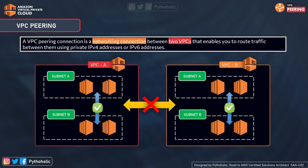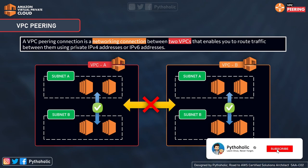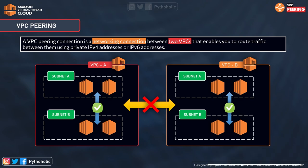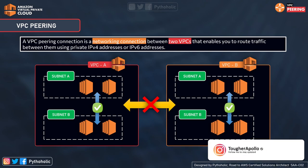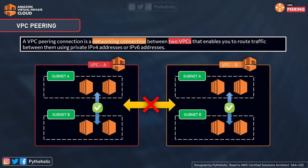The problem we were talking about was a scenario where the instances are not able to talk to each other if they are present in other VPCs. A VPC peering connection is a network connection between two VPCs that enables you to route traffic between them using private IPv4 addresses or IPv6 addresses. The instances across subnets are able to communicate with each other but not with instances across VPCs — VPC A and VPC B are totally isolated with no communication between them.